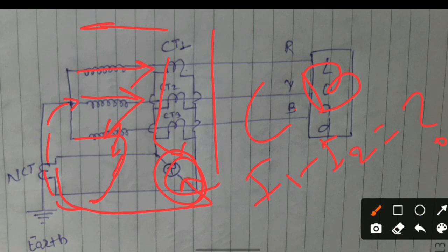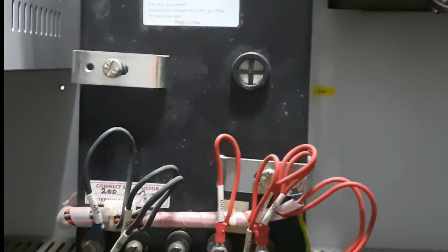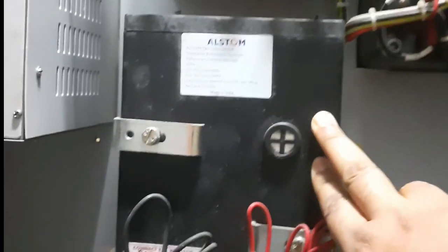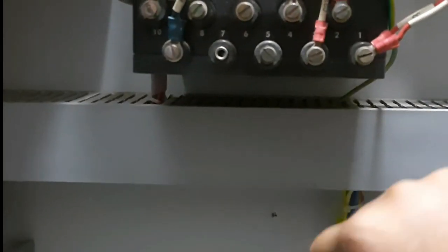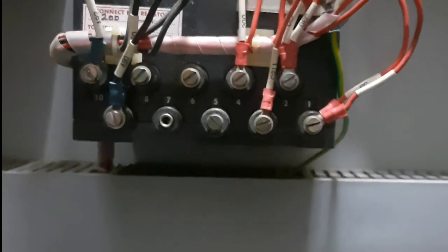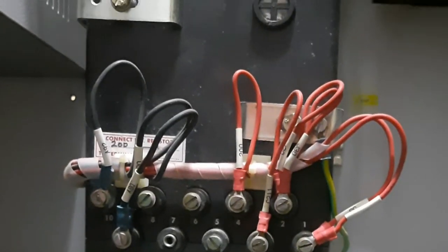Now we are seeing the restricted earth fault relay from the back. Port numbers 1 and 2 go to the annunciator. Port numbers 3 and 4 go to the master trip relay. Ports 9 and 10 receive connections from the CTs. This is the earth wire. In this way we do the connection of the earth fault relay.